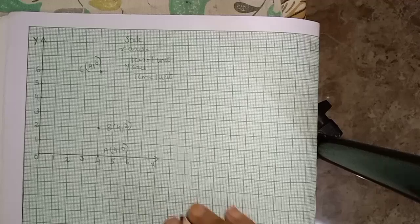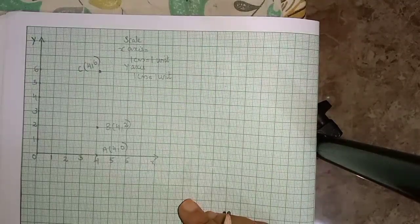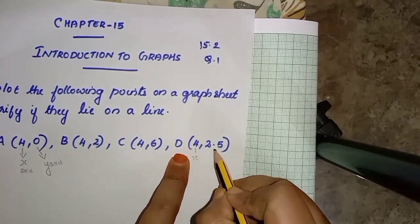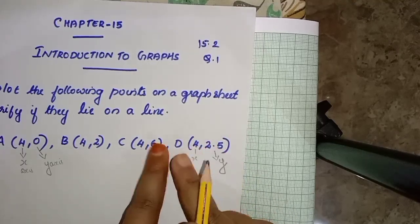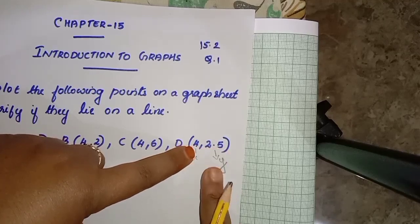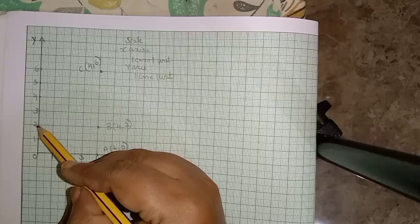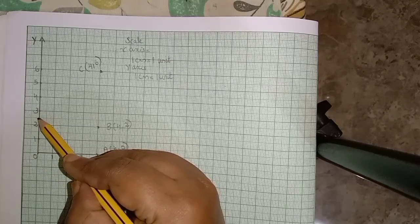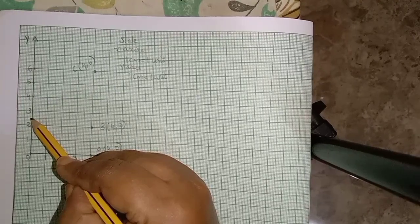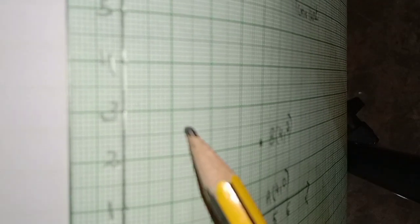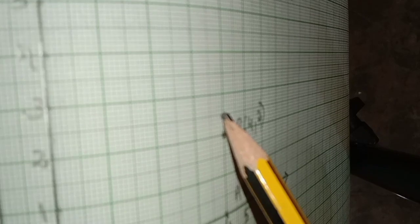Now we will do this point. This is D. The value of x is 4. Now if we go to this point, the x-axis value is 4. We can get this point on the axis. The y-axis value is 2.5. We can see 2.5 on the y-axis. This is 2, this is 3 — we can see the middle line. This is 2.5. I will zoom in. This is 2, this is 3 — we can see the middle line. This line is 2.5. We can choose 2.5 and see the point here. D is at (4, 2.5).